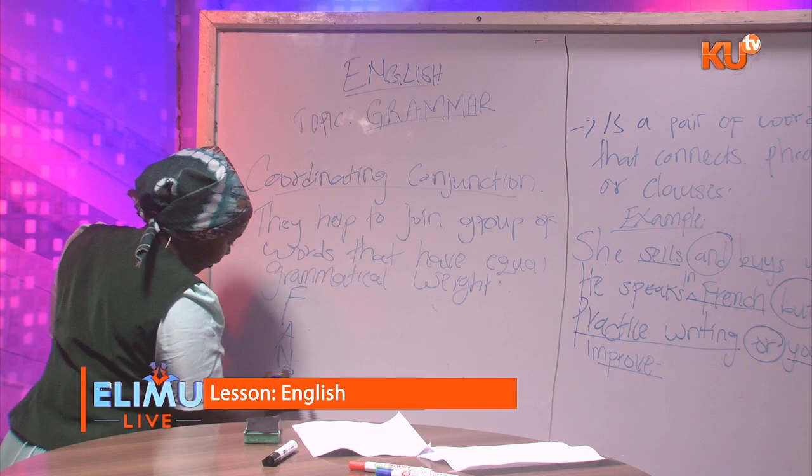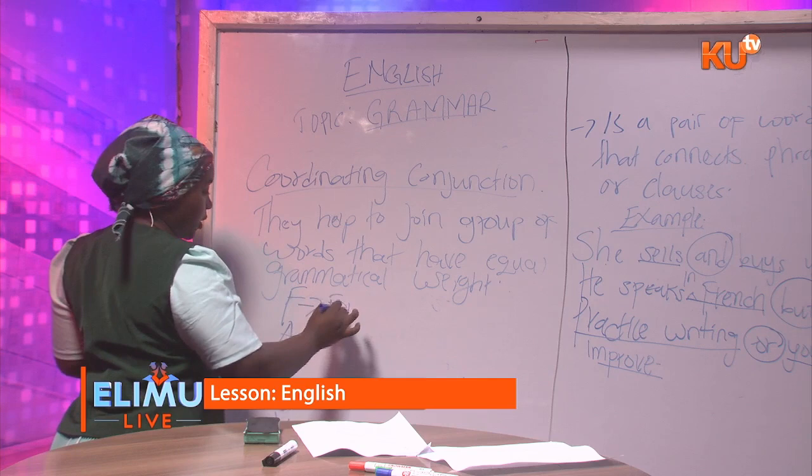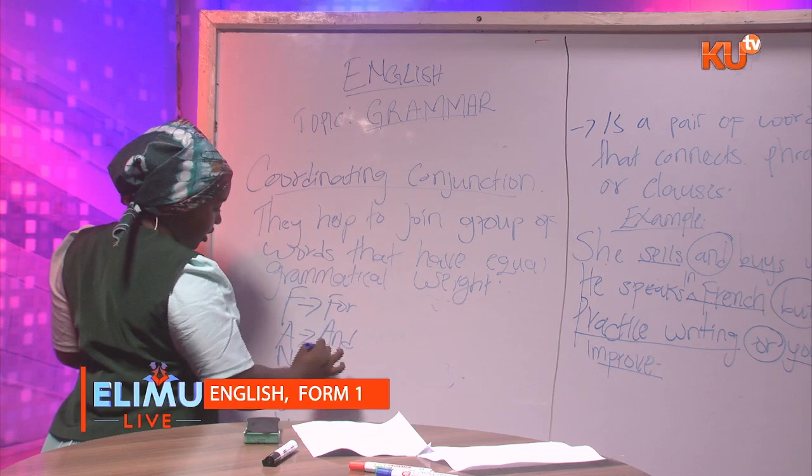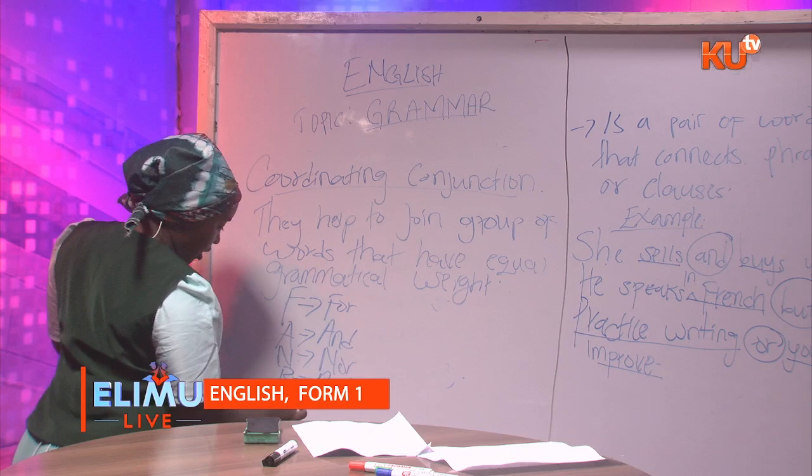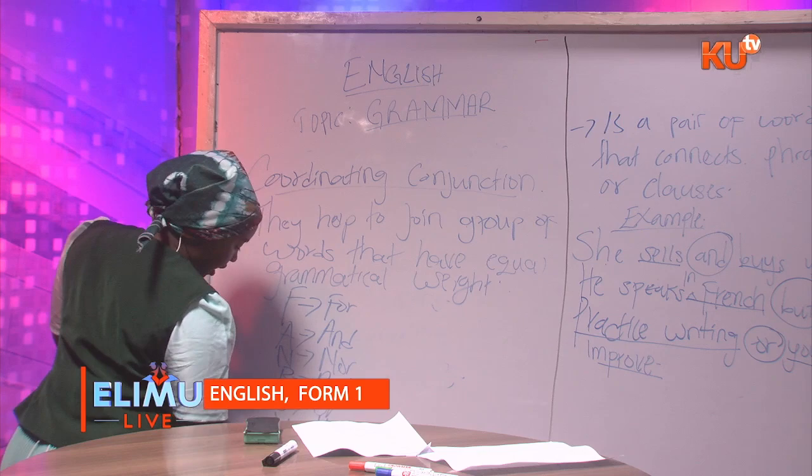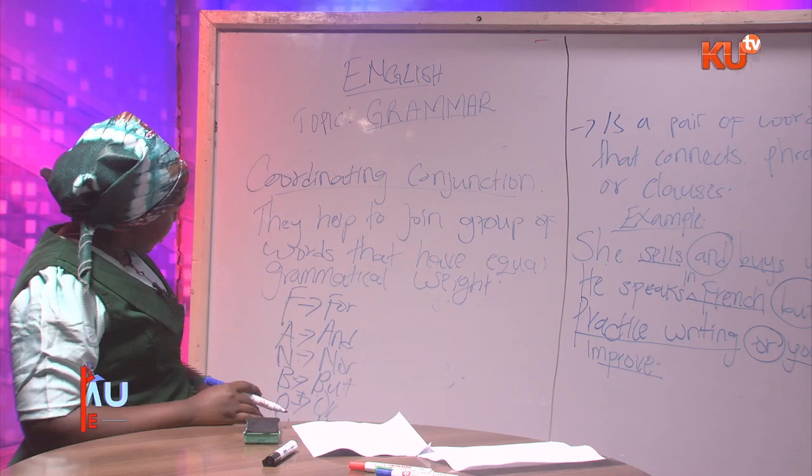F stands for 'for,' A stands for 'and,' N stands for 'nor,' B stands for 'but,' O stands for 'or,' Y stands for 'yet,' and S stands for 'so.' These are the seven coordinating conjunctions, and they each have different uses.